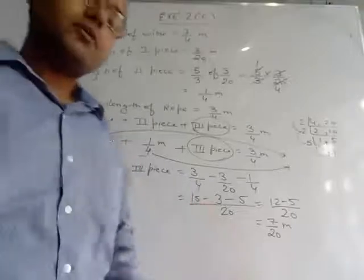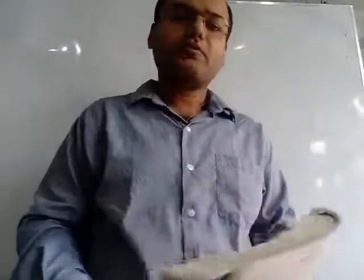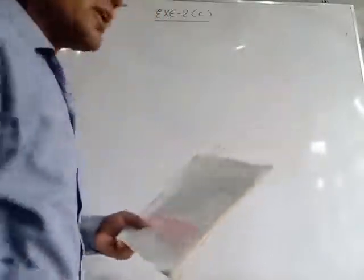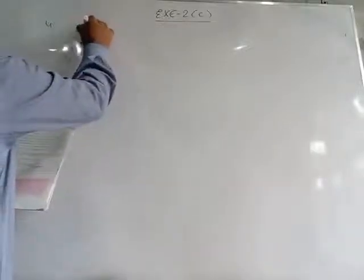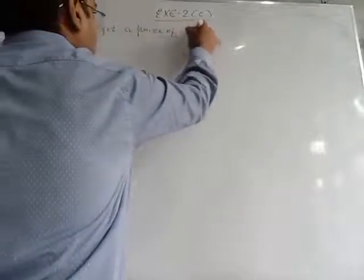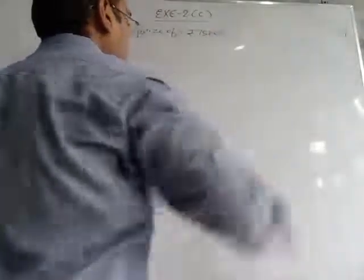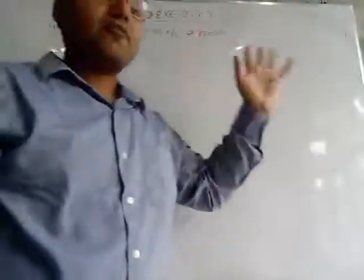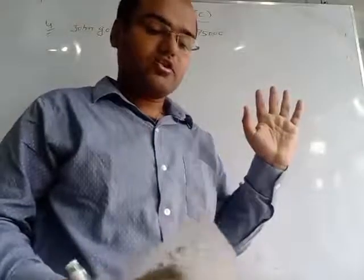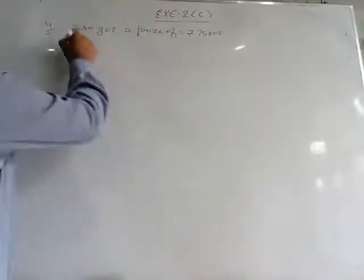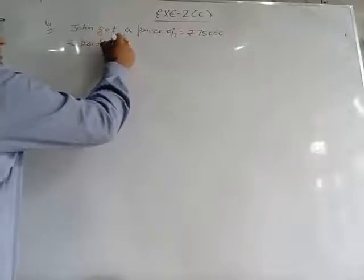Now see question number 4. John got a prize of Rs. 75,000 in a TV contest. He paid 1/10 of the prize as income tax. So first we write: money paid as income tax. 1/10 is a fraction, so we multiply 1/10 by 75,000. The zero cancels and he paid Rs. 7,500 as income tax.